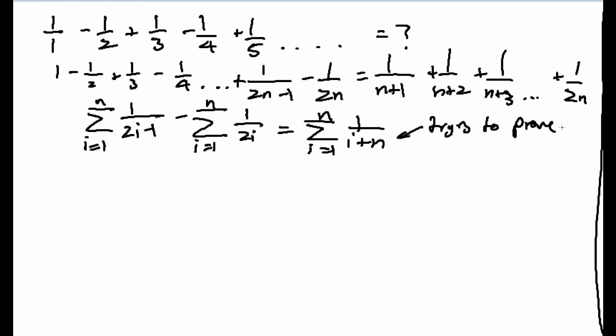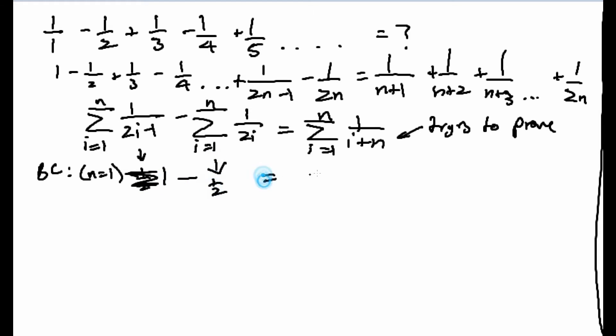We're going to prove this using induction. There are two steps to induction — the base case and the inductive step. For the base case, n=1. Induction works by proving a base case and then proving the expression holds if you increment n by 1. If it's true for n=1 and true when you increase n by 1, then it's true for n=2, n=3, n=4, and so on. For n=1: 1 - 1/2 = 1/2, and that equals 1/2. So the base case works.